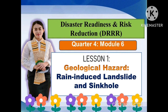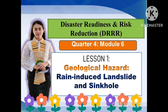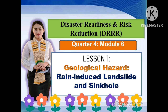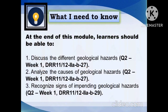We have our new topic in Disaster Readiness and Risk Reduction, which is all about Geological Hazards, Rain-Induced Landslides, and Sinkholes. This will be the fourth quarter topic, module number six. For the objectives of this lesson, we will focus our learning objectives on the following.